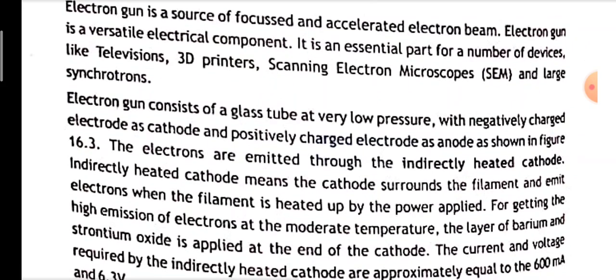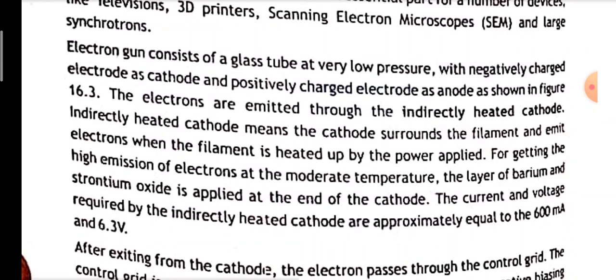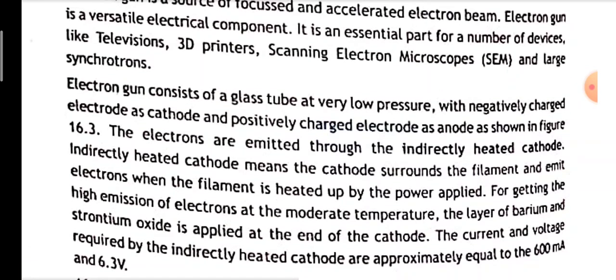An electron gun consists of a glass tube at very low pressure, with a negatively charged electrode as cathode and a positively charged electrode as anode.